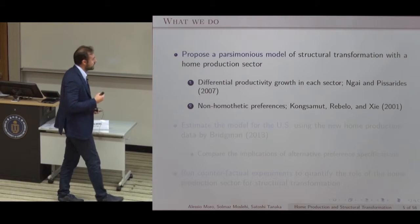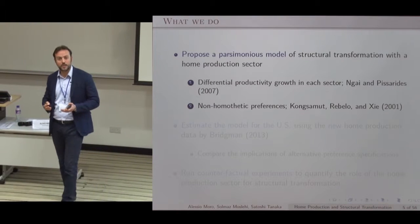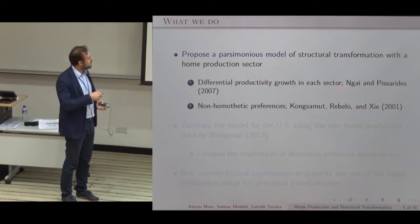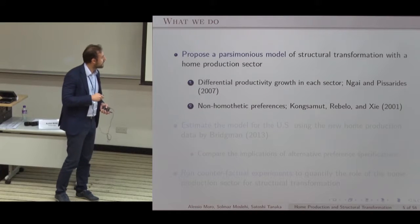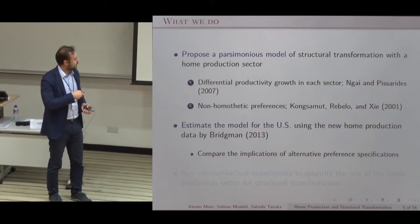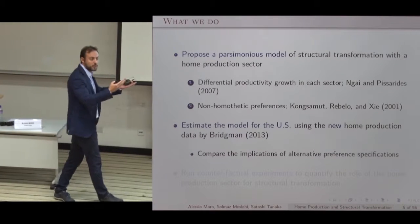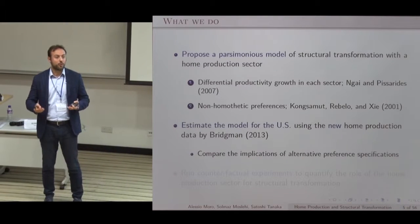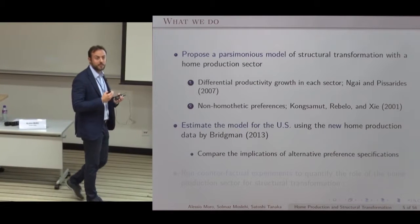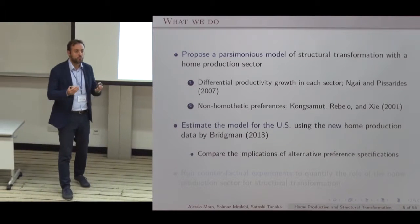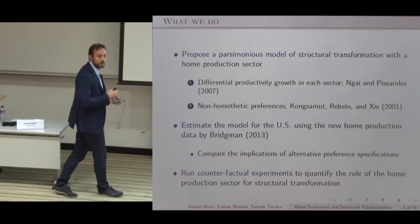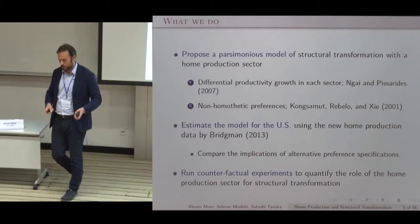What we do here is take the most parsimonious model of structural transformation with home production. There are two channels of structural transformation — the usual ones: differential productivity growth and non-homothetic preferences. We take this model and, by using data for home production together with standard market measures of structural transformation, we estimate the model for the US. We compare several preference specifications, because when you introduce home production it's not straightforward which preference specification to assume. Then we use the estimated model to run counterfactuals to assess the role of home production for structural transformation.